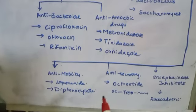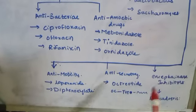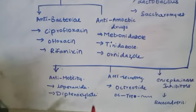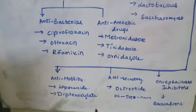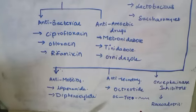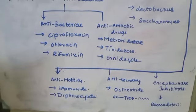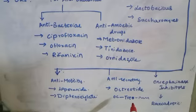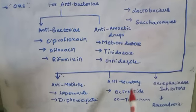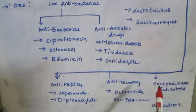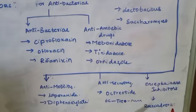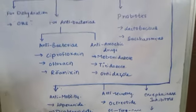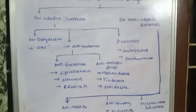For non-infective diarrhea, the categories are anti-motility, anti-secretory, and enkephalinase inhibitor. For anti-motility: loperamide and diphenoxylate. For anti-secretory: octreotide — remember the hint, 'OC' and 'trio' as in 'tree and tide' — octreotide. The enkephalinase inhibitor is racecadotril. This is the classification of anti-diarrheal drugs.